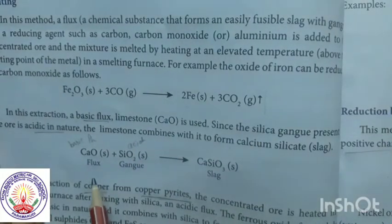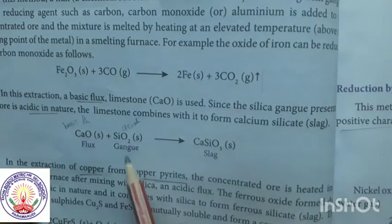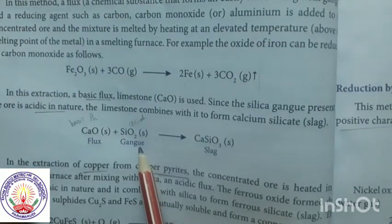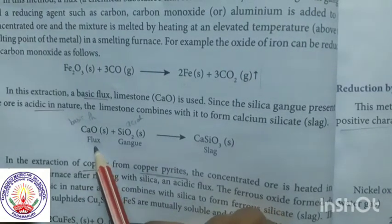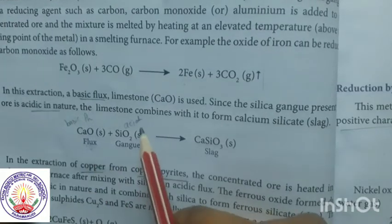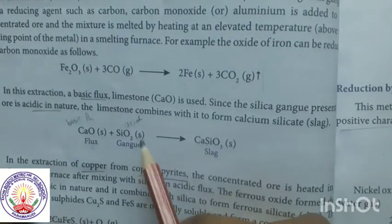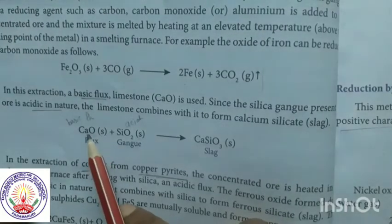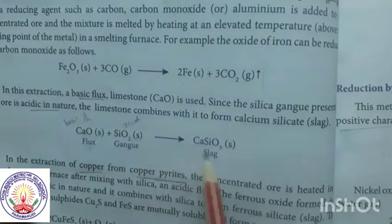Some impurities such as SiO2 are present — this is called gang, meaning impurities. To remove these impurities we use flux. SiO2 is an acidic flux, so we use basic flux, that is CaO. These two combine and become slag, and the slag is removed to give pure metal.